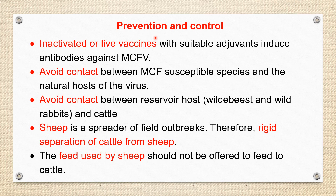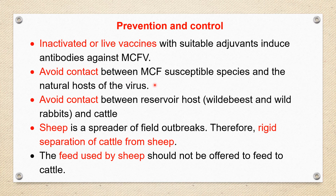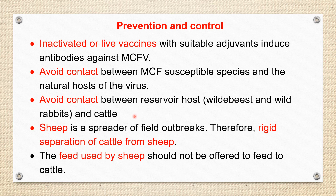We see here Prevention and Control. The disease can be prevented by inactivated vaccines or live vaccines with suitable adjuvant to induce antibodies against MCF. Some hosts carry the infection, so avoid contact between MCF-susceptible species and the natural hosts of the virus — that means avoid contact between the reservoir hosts, which are wildebeest and wild rabbits, and cattle, so the disease will not occur.